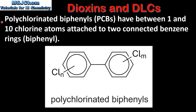And finally we look at polychlorinated biphenyls or PCBs. PCBs have between 1 and 10 chlorine atoms attached to 2 connected benzene rings. And here we have the general formula for a PCB.